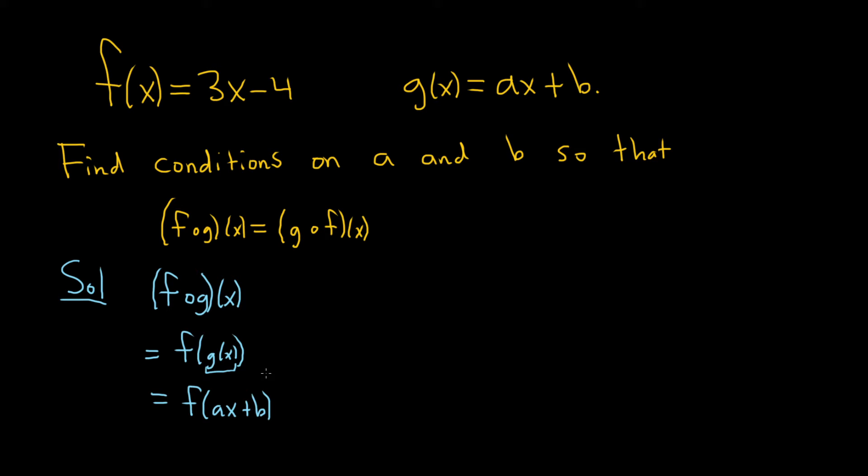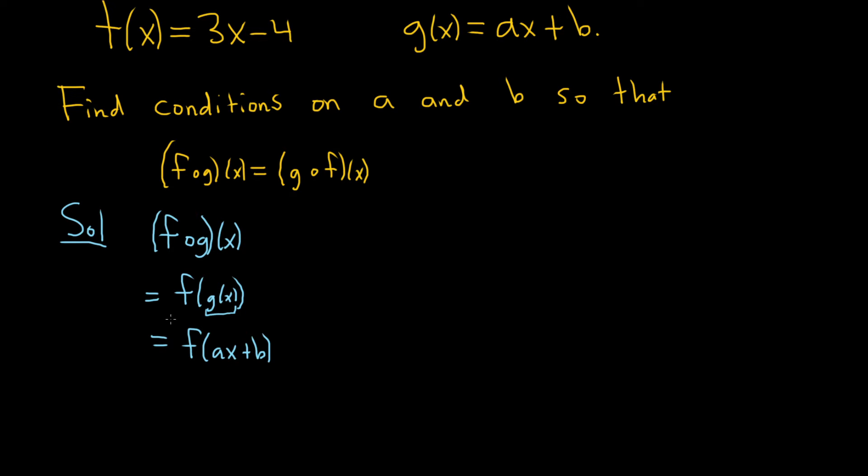And now you look at f. So f of x is equal to 3x minus 4. So here our x is this whole thing, right? That's our x. So it's 3x, but it's not x, it's ax plus b. And then we have minus 4.